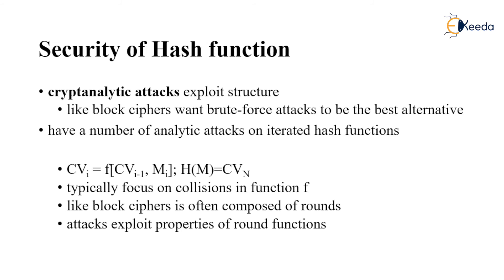Hash function attacks typically focus on collisions within the function. Like block ciphers composed of rounds, attacks exploit the properties of those round functionalities. As seen in previous lectures on SHA, CMAC, and HMAC, different iterations and different numbers of rounds are implemented, with bits being collided or padded to equalize the length to b bits, completing the full hash functionality.